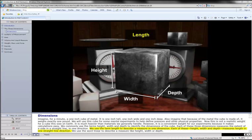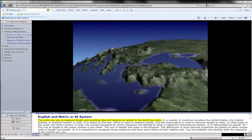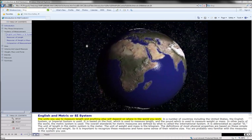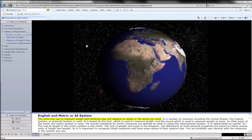Each of these, height, width, and depth, measures length in one straight line direction. We use the word linear to describe a measure like height, width, or depth. The units you use to measure length and anything else will depend on where in the world you work.